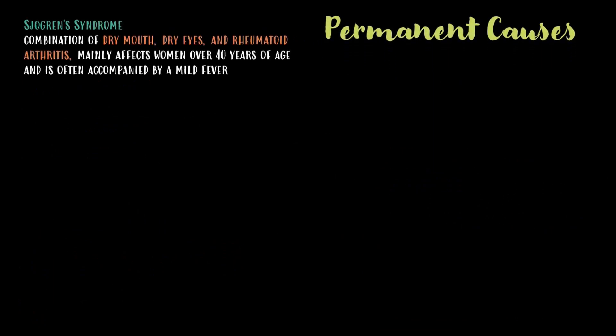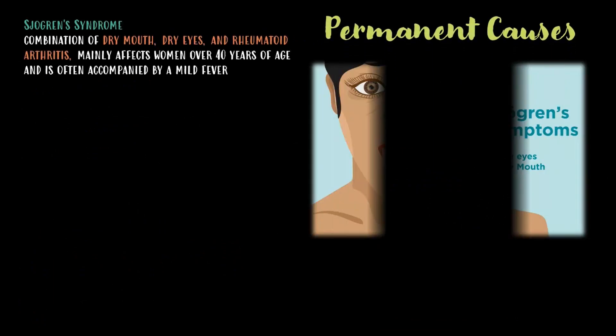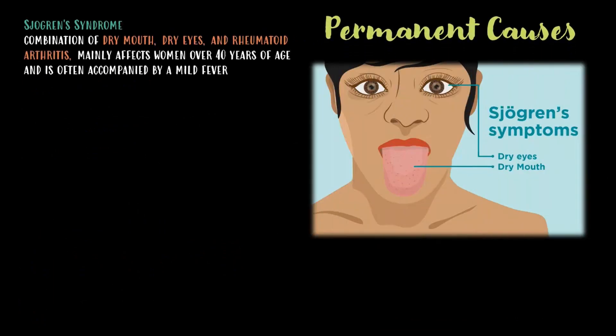The permanent causes may include Sjögren's syndrome, which is a combination of dry mouth, dry eyes, and rheumatoid arthritis. It mainly affects women over 40 years of age and is often accompanied by a mild fever.